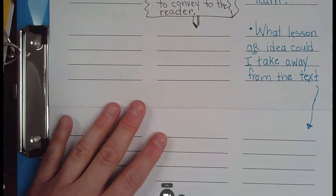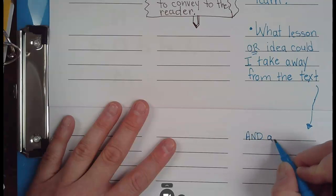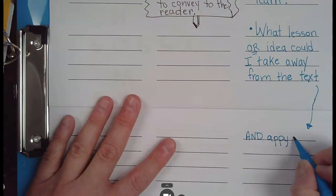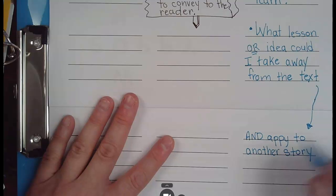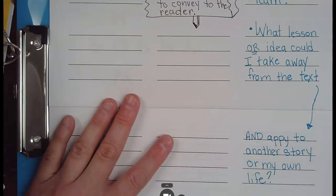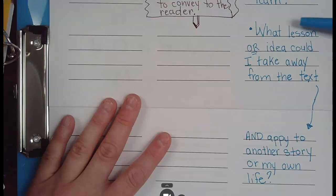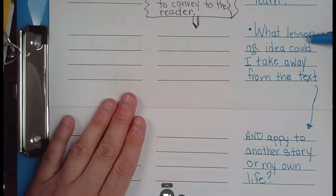What lesson or idea could I take away from the text? And then, the rest of it is, and apply to another story or my own life. So, so far, I have two big questions. When we're talking about theme, we're talking about, what does the author want me to take away or learn? And the other question is, what lesson or idea could I take away from the text and apply it to another story or my own life?